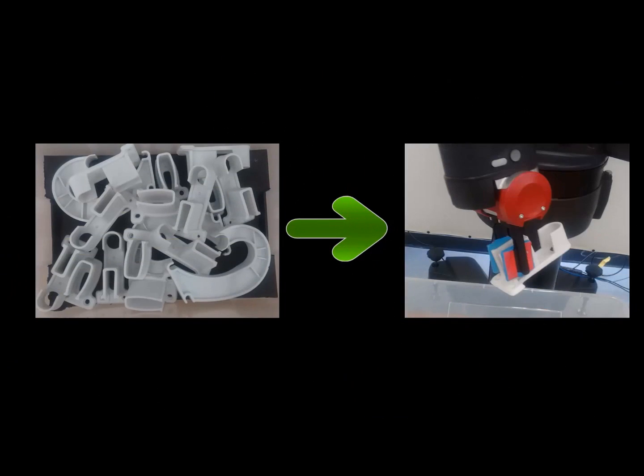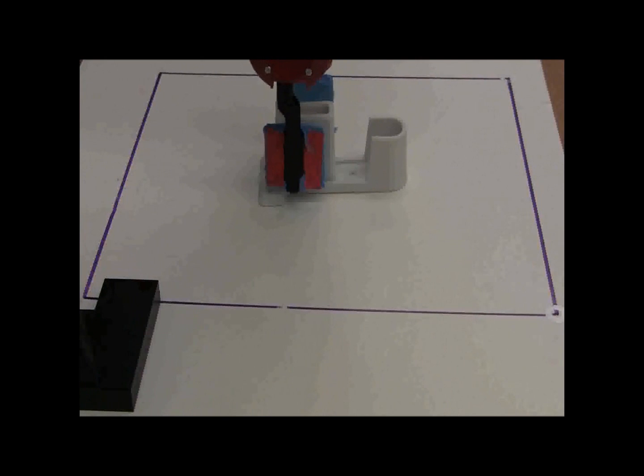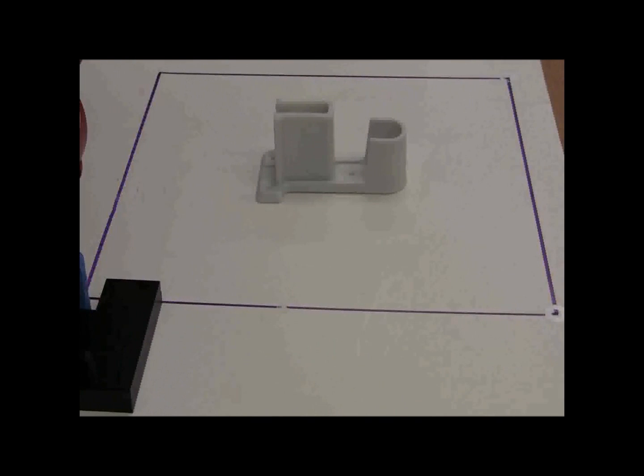Sometimes the part location in the bin cannot be estimated accurately. In such cases, after the robot drops the part at the desired location, it needs to generate additional moves to adjust the part location. The robot is smart enough to do this on its own.